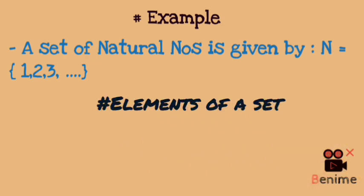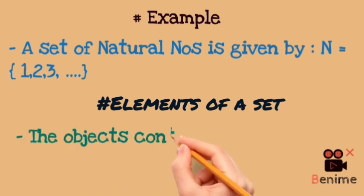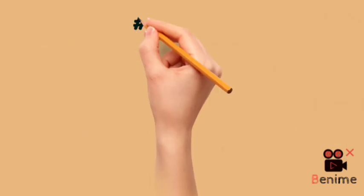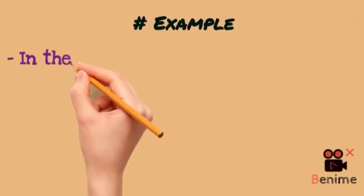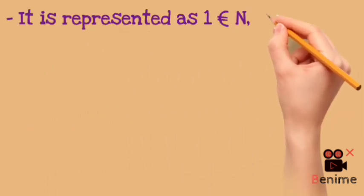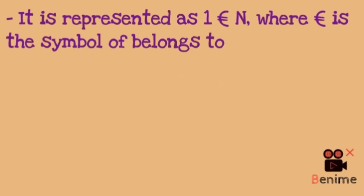Now I will explain the elements of a set. The elements of the set are what we call members or objects. For example, a set containing {1, 2, 3, 4, 5, 6, 7, 8} — all of these we call elements of the set. We can write: 1 ∈ N, meaning 'one belongs to the natural number set N.'